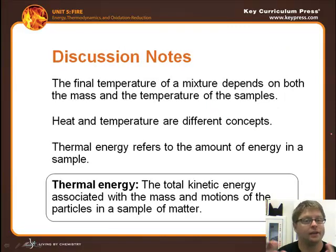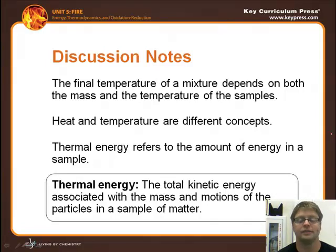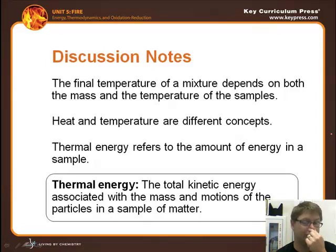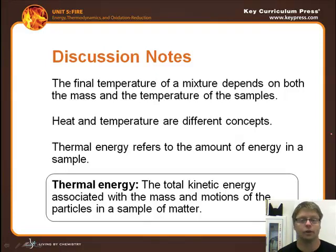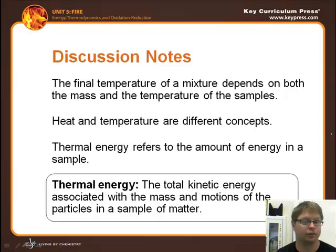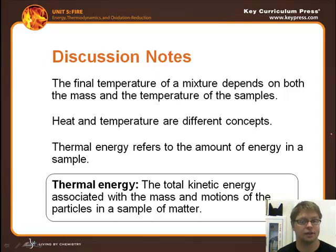When you add two different substances together, the temperature of the mixture depends on the mass and the final temperature of the samples. If you have a large container of water and a small cup of water, the large container will have more mass. When you mix them together, you have to take into consideration the mass and the starting temperature.